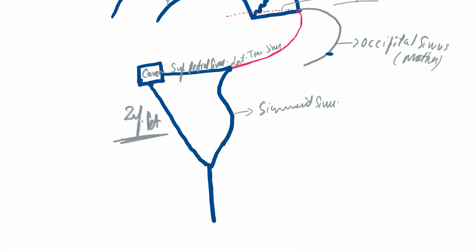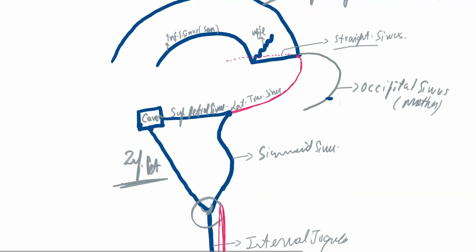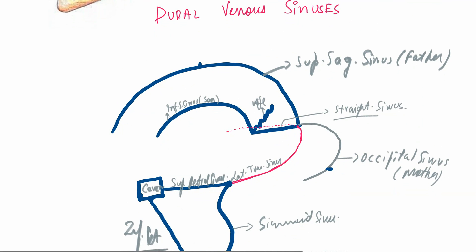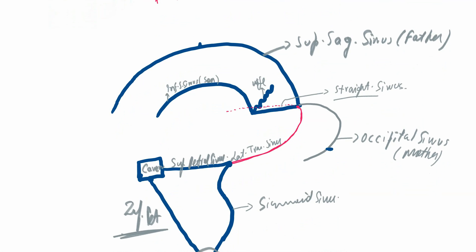And this final straight part is called the internal jugular vein. Here we also have the jugular bulb, along with the internal carotid artery. That's all — I hope you liked this analogy. Thank you for watching.